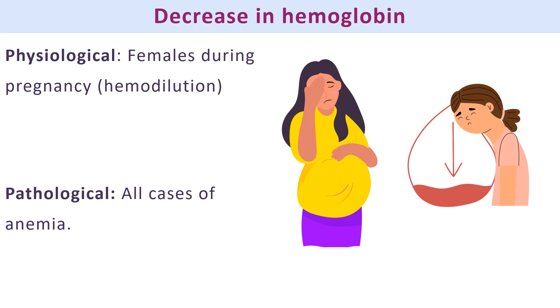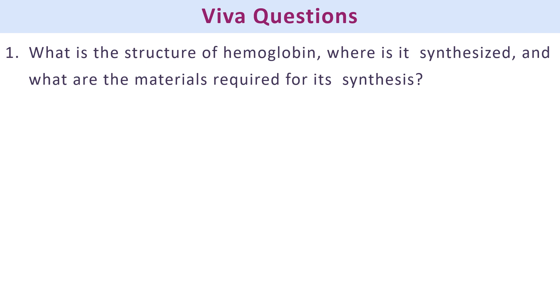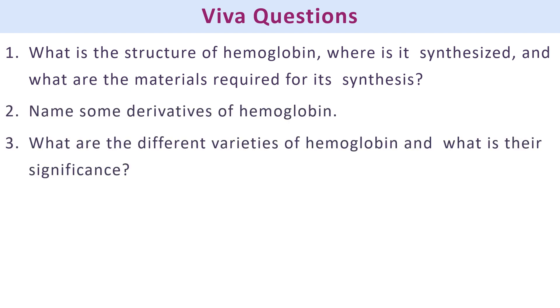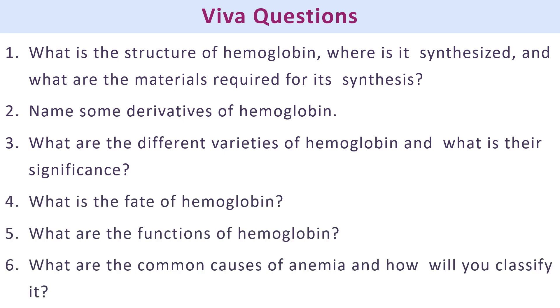That covers the major important questions from hemoglobinometry. However, additional theory questions you should prepare include: structure of hemoglobin, hemoglobin synthesis, derivatives of hemoglobin, varieties of hemoglobin and their significance, fate of hemoglobin, functions of hemoglobin, and common causes of anemia with classification. I hope this video is useful. Thank you.